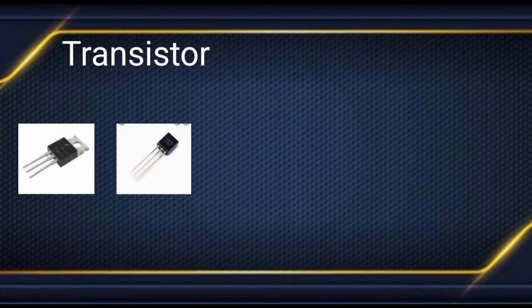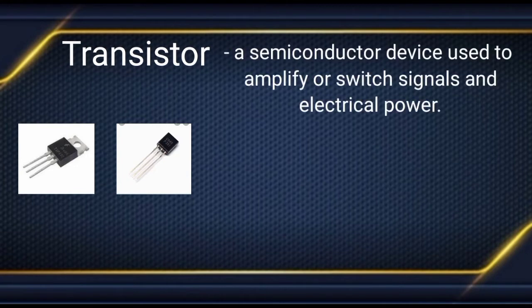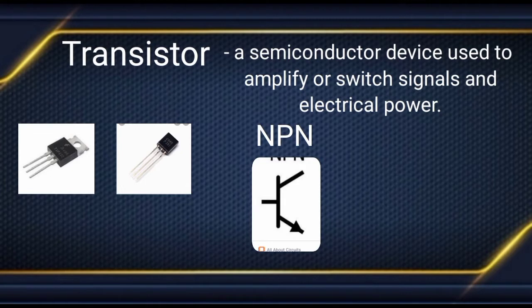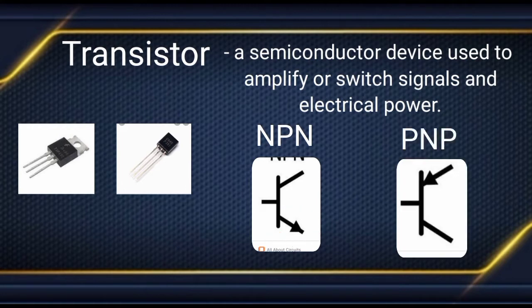Another component is the transistor — a semiconductor device used to amplify or switch signals and electrical power. It has two types. The first is the NPN, or negative-positive-negative transistor, and the arrow in the symbol is pointing outside of the component. The second is the PNP, or positive-negative-positive transistor, where the arrow in the symbol is pointing inside of the component.